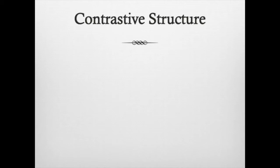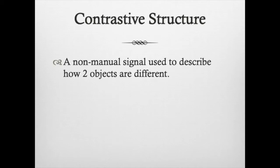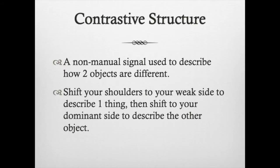That's what we call contrastive structure. It's a non-manual signal used to describe how two things are different. Now in these examples I talked about siblings, but you can do it for all sorts of things. What you do is shift your shoulders to your weak side to describe one thing, and then shift to your dominant side to describe the other.